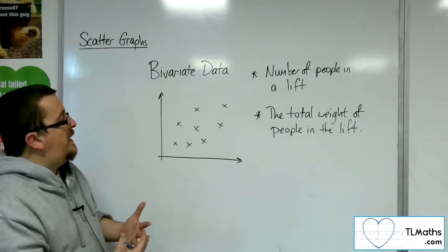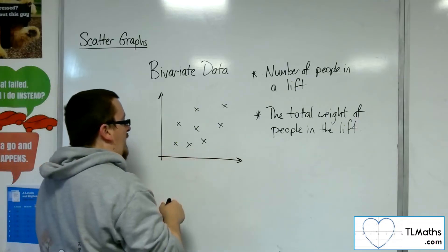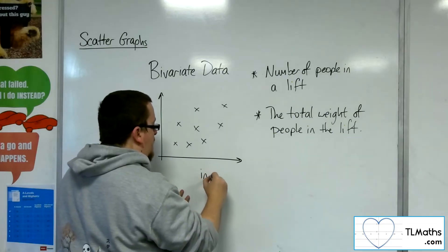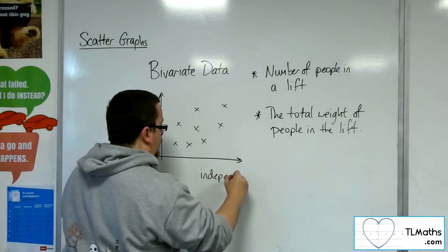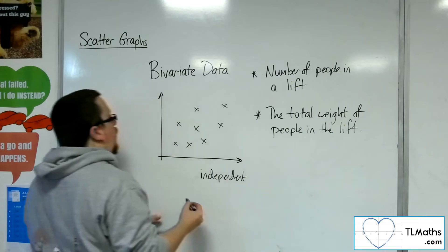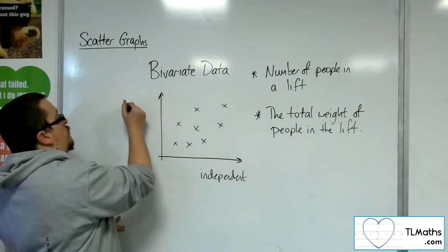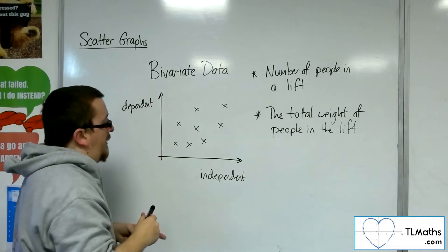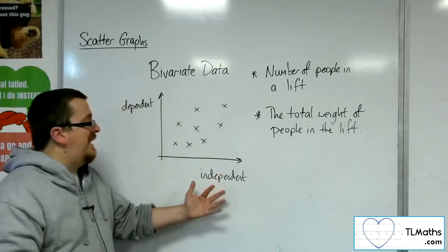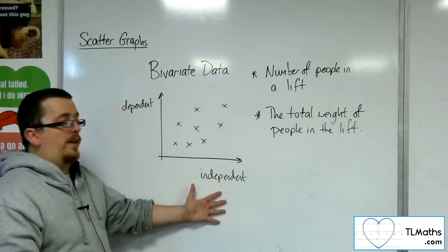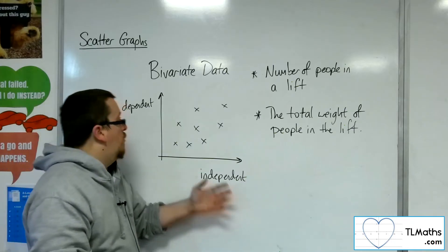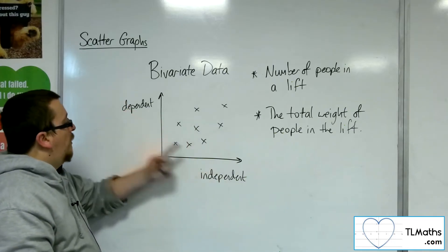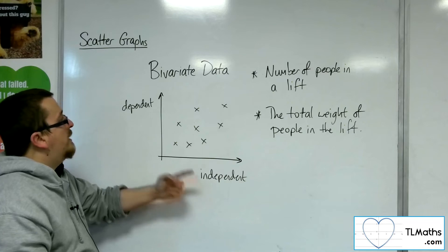that the horizontal axis should be the independent variable. And what that means is that this variable is independent of the other and does not rely on the other, while this one depends on this variable.